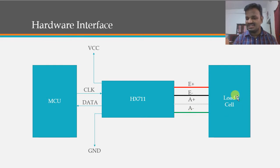Here we used A+ and A- single channel connected with the load cell. From the load cell we will be getting four wires: red, black, white, and green.